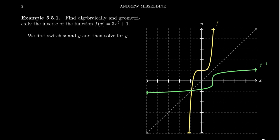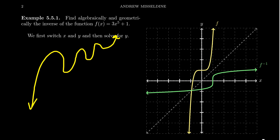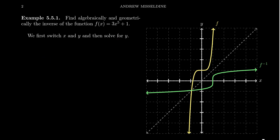Not every polynomial function is going to be one-to-one. There are so many wiggles and turning points that there are going to be many places where it fails the horizontal line test. So not every polynomial function is going to be one-to-one, and therefore it's not invertible. But there will be many that are.